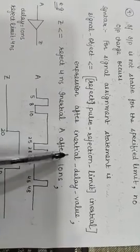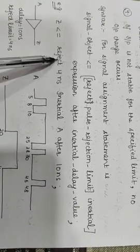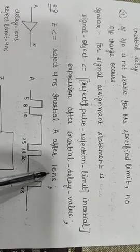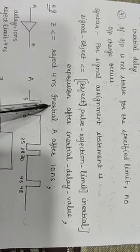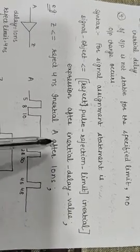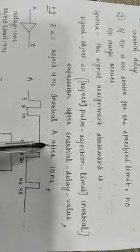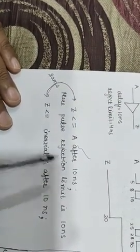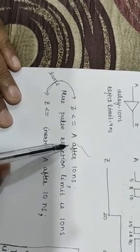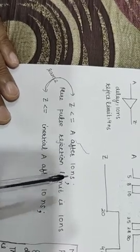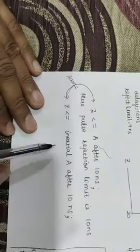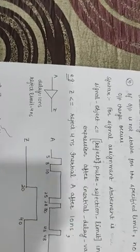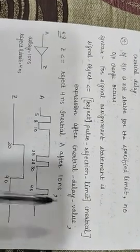If the Reject clause is not written, the pulse rejection limit defaults to the same value as the inertial delay value — in this example, 10 nanoseconds. Also, the keyword 'Inertial' is also optional. If I simply write 'Z is A after 10 nanoseconds' without specifying Reject or Inertial, it will still apply the inertial delay model. In contrast, for Transport Delay I must use the keyword 'Transport'. Finally, note that the pulse rejection limit cannot be negative, and it cannot be greater than the inertial delay value.